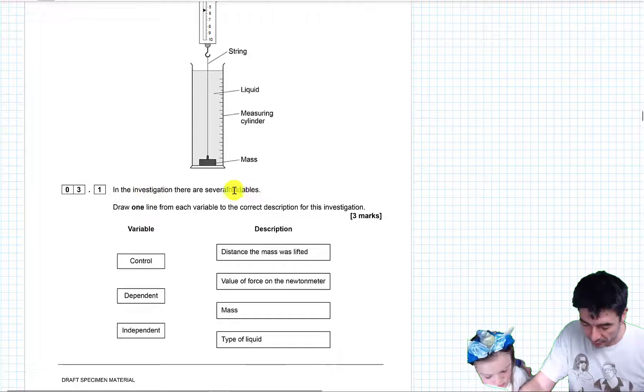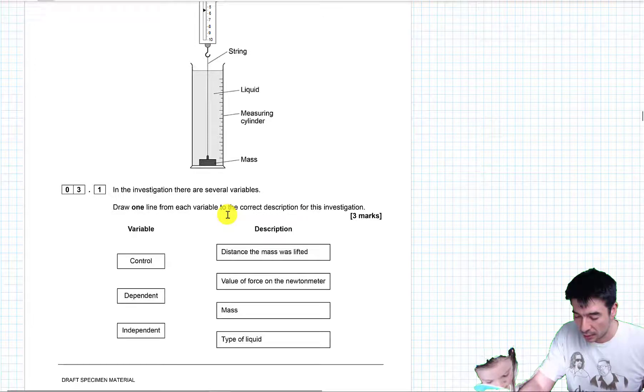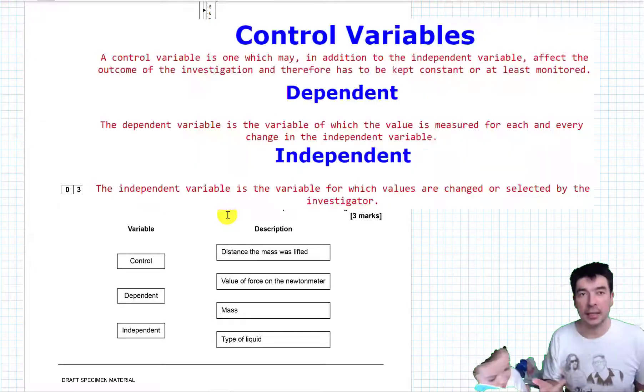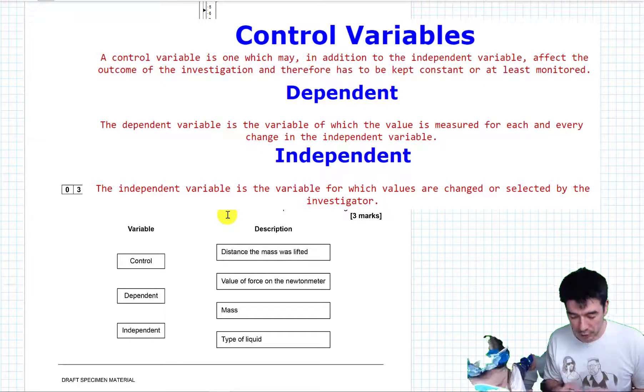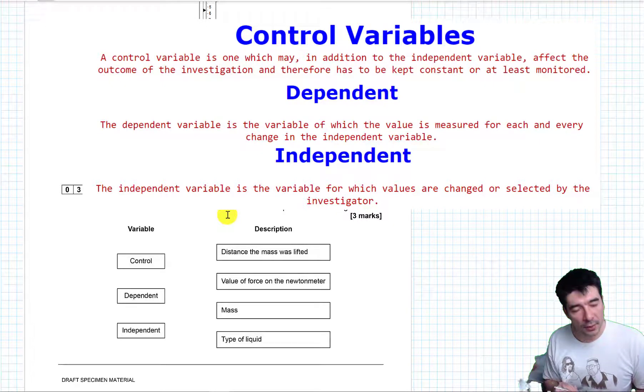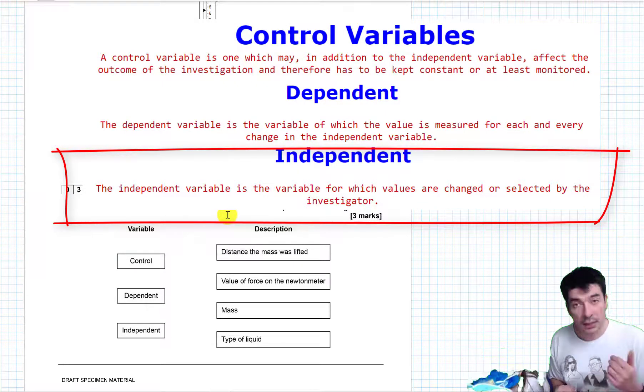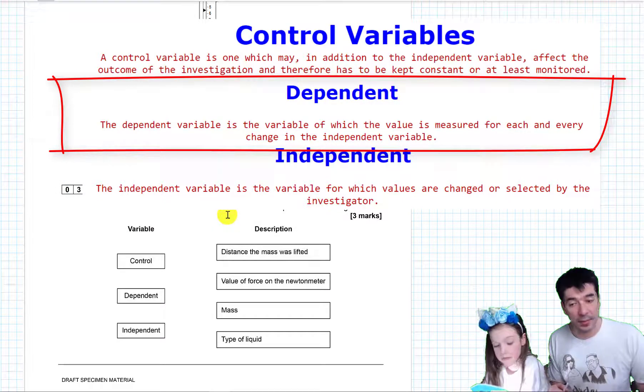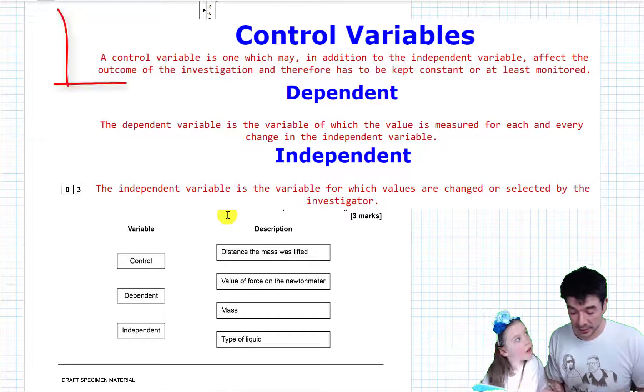In the investigation there are several variables. Draw one line from each variable to the correct description for this investigation. So we've got control, dependent, and independent. Independent's the one that's easiest to remember, it's the one variable you are going to change. Dependent is the thing you measure, it's the thing that depends on the independent one. And the control stuff is what you want to keep the same so that you do a fair test.